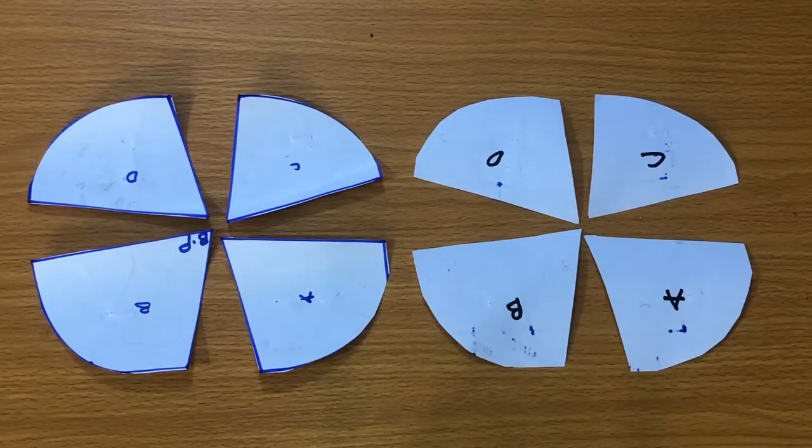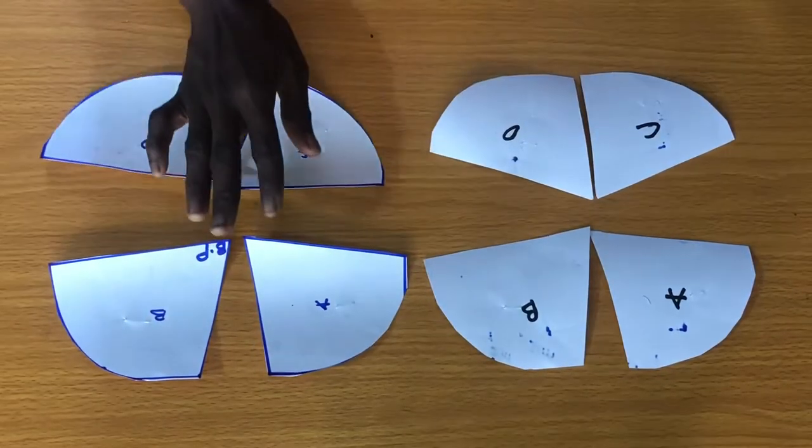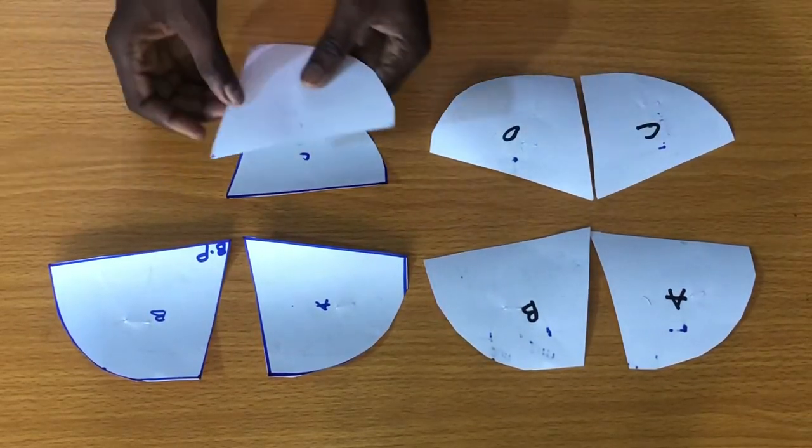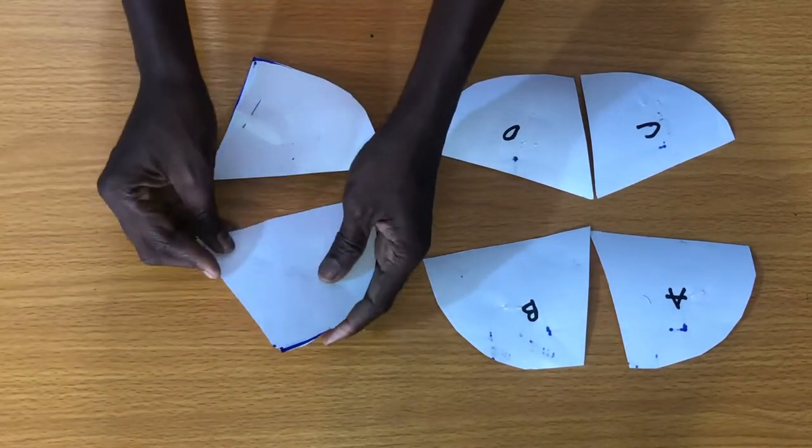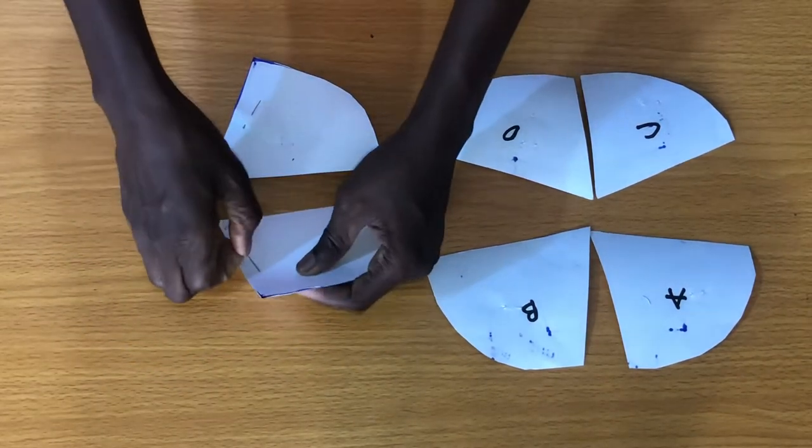The next step is to take the patterns to the sewing machine to secure them together. So in order to do this, you place D on C. You also place B on A to secure the slant side by quarter of an inch.